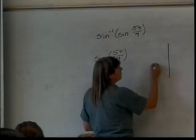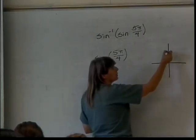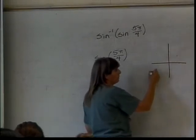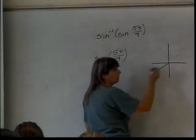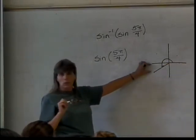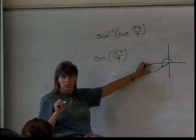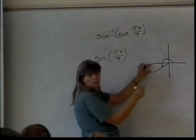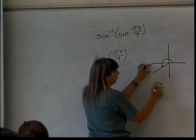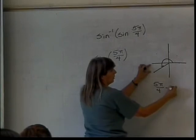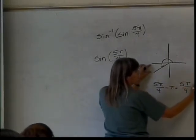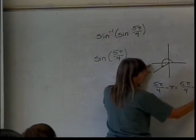So in my quadrants, pi over 4 is here, 2 pi over 4 is here, 3 pi over 4 is here, 4 pi over 4 is here, 5 pi over 4 is about here. Going this way, that's 5 pi over 4. The reference angle is this piece, which is calculated by taking the angle, because I didn't go all the way around more than once, taking the angle 5 pi over 4 and subtracting pi. Which will give me 5 pi over 4 minus 4 pi over 4, which is pi over 4.